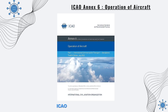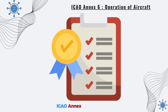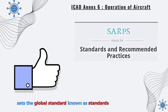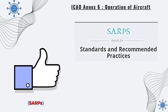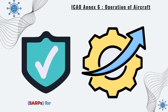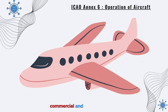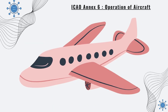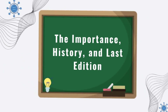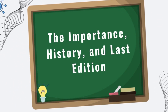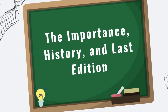Aikau Annex 6 is a document that sets the global standard, known as Standards and Recommended Practices, SARPs, for safe and efficient operation of airplanes in international commercial and general aviation. Let's start with the importance, history, and last edition.